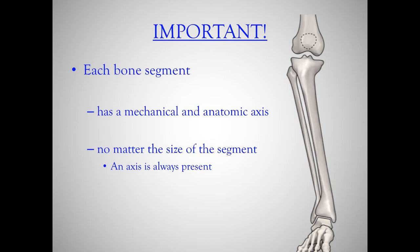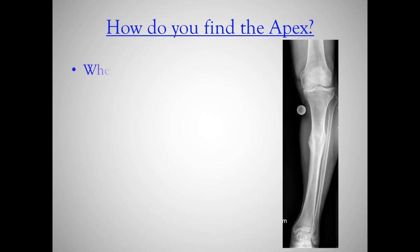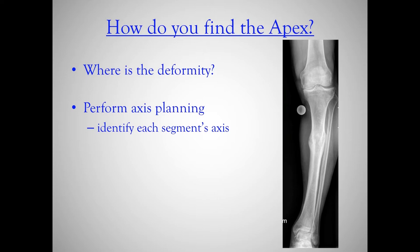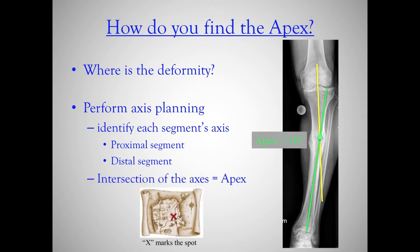Each bone has a segment no matter how small. In this example there's a large mid-shaft tibial segment, but two smaller metaphyseal segments at each end, and they all have an axis. To find the apex, you perform axis planning — identify each segment's axis. When there is a deformity, there's an axis in a segment proximally and distally. In this example, we find the proximal axis using a mid-diaphyseal line, the distal axis by mid-diaphyseal line, and X marks the spot — there's the apex. The magnitude is 10 degrees.